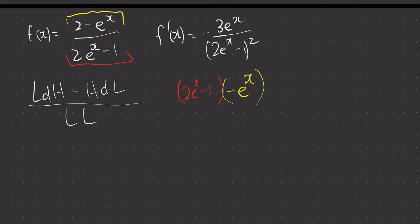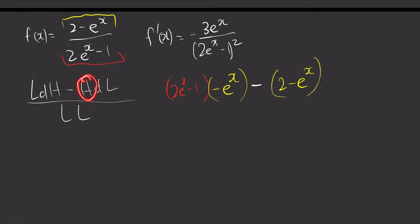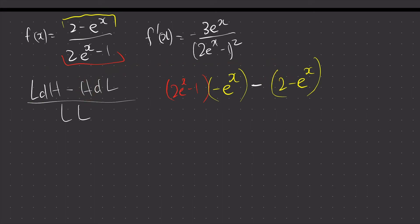Next, minus: copy down the high, which is (2 minus e to the power of x). Then d the low: the derivative of (2e to the power of x minus 1) is just 2e to the power of x. I copy the 2 and differentiate e to the power of x, which stays as e to the power of x.